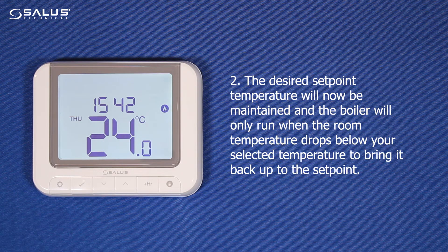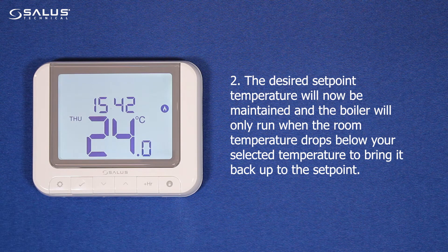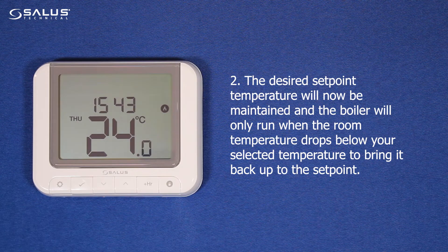2. The desired set point temperature will now be maintained, and the boiler will only run when the room temperature drops below your selected temperature, to bring it back up to the set point.